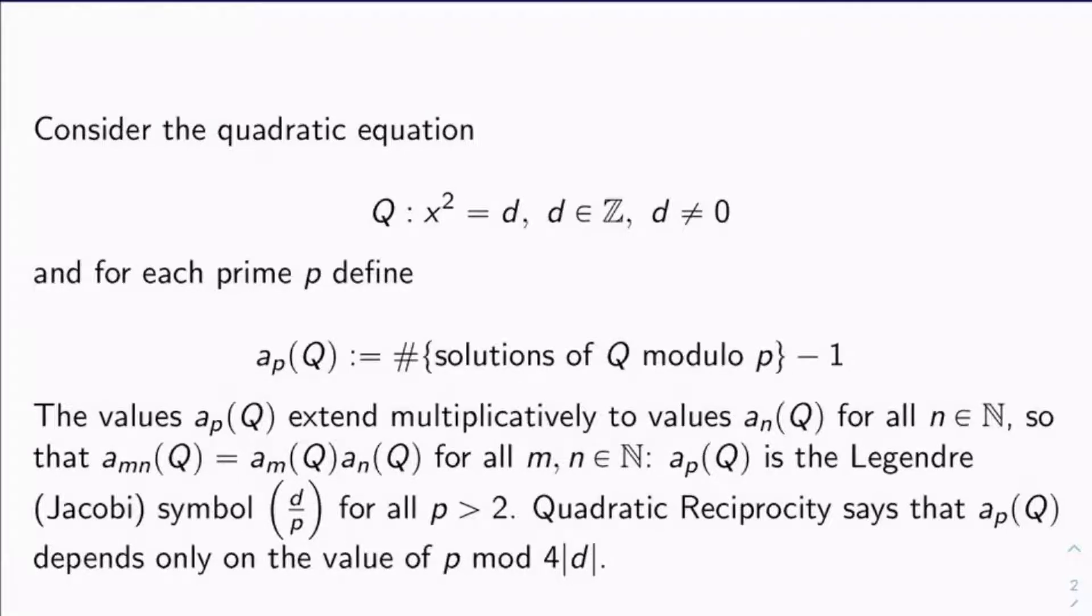Okay, if you haven't done this exercise yet, quadratic reciprocity, one of the big theorems of elementary number theory, it says that a_p(Q) depends only on the value of p mod 4|d|. That's a very quick exercise in quadratic reciprocity, and I would encourage you that you try it if you haven't before.